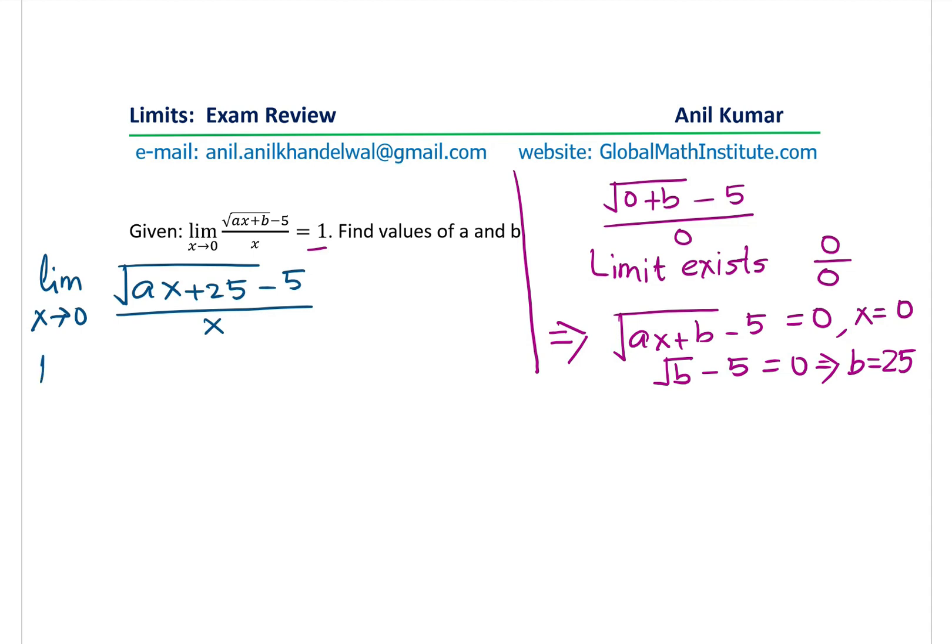So that becomes the equation now. Now to find this limit, what we should do is we should rationalize this. So the limit where x approaches 0 for square root of ax plus 25 minus 5 over x. We need to rationalize. So we get square root of ax plus 25 plus 5 divided by square root of ax plus 25 plus 5.